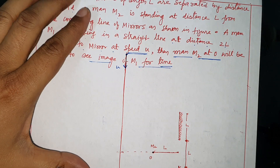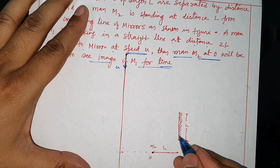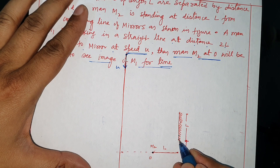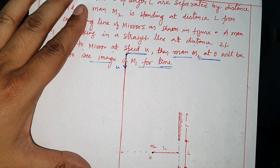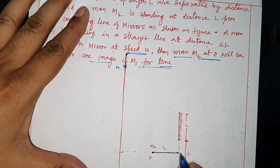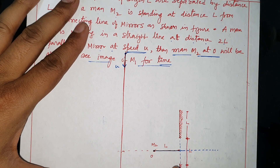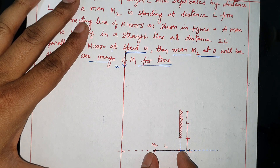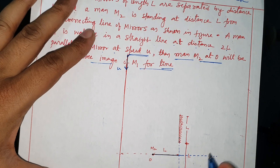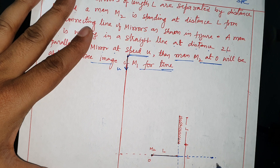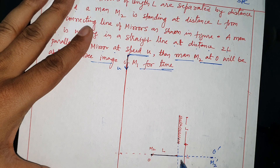Okay, so first of all, where will this man's image be? This man's image will be formed by the mirror — we extend the mirror to locate the image relative to both mirrors.